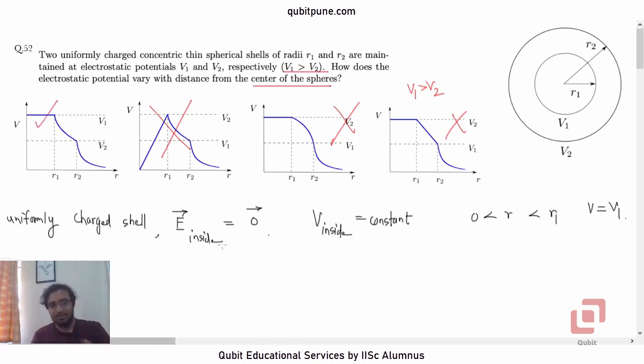And if we analyze it a bit further, then if we consider the region of space between R1 and R2, here you expect the potential to drop with 1 upon R. V is directly proportional to 1 upon R or inversely proportional to R, you know that standard result. And in between this region, which is in between the two shells, the potential will drop and it will vary inversely with R. It is going to decrease from V1 to V2.